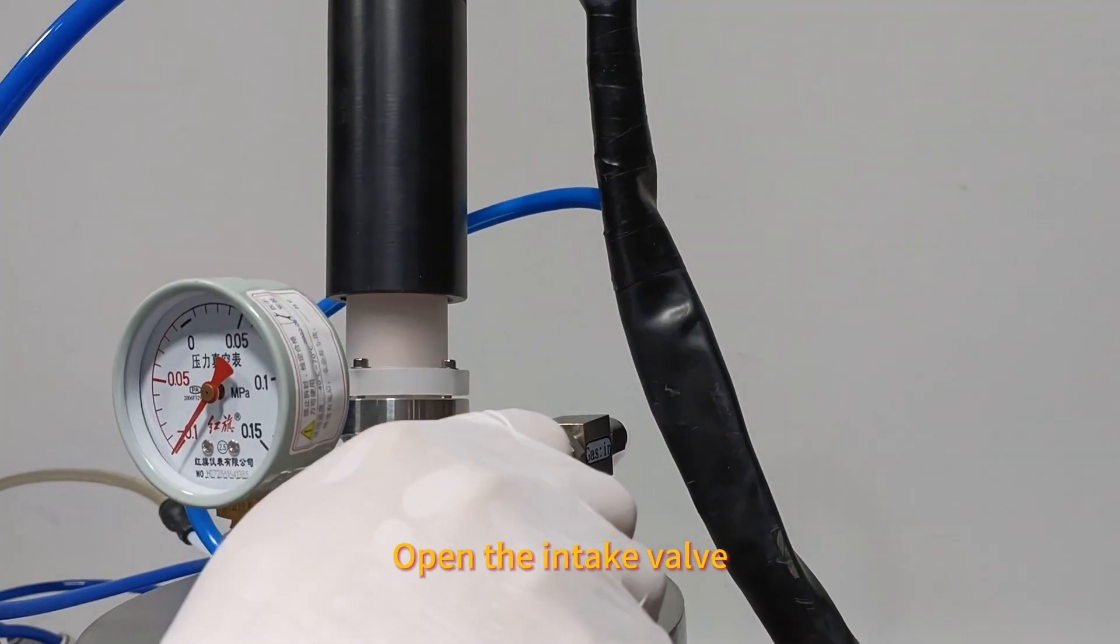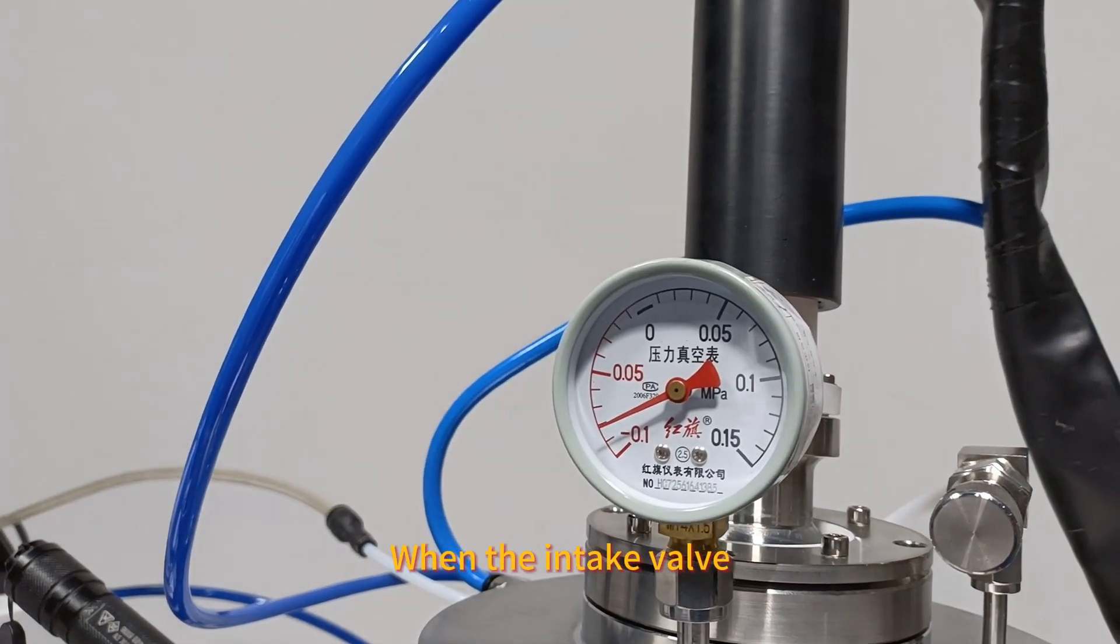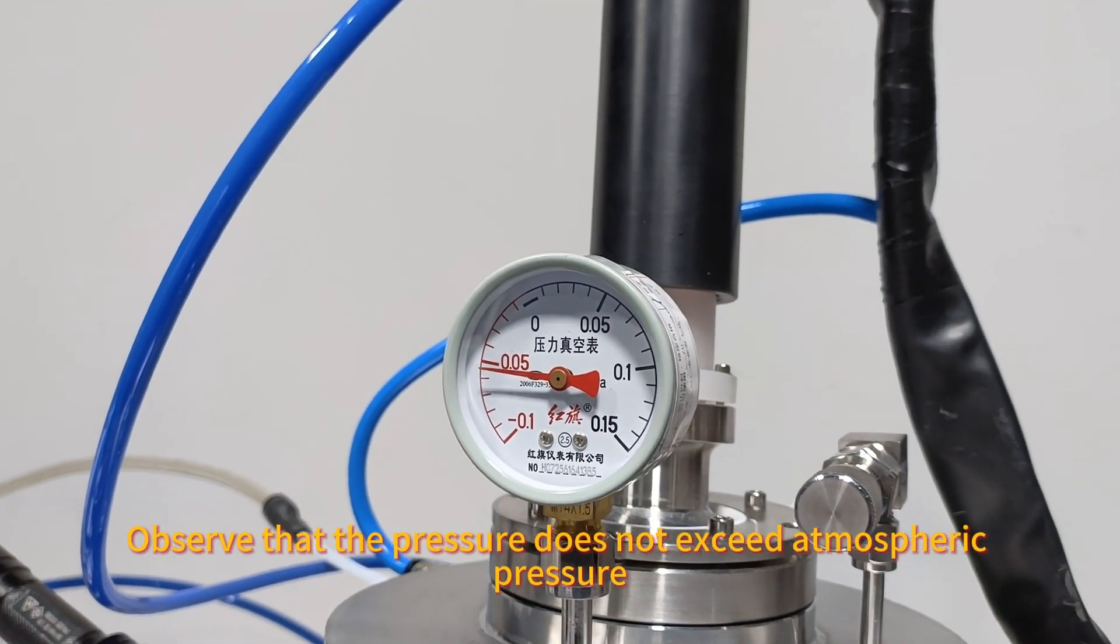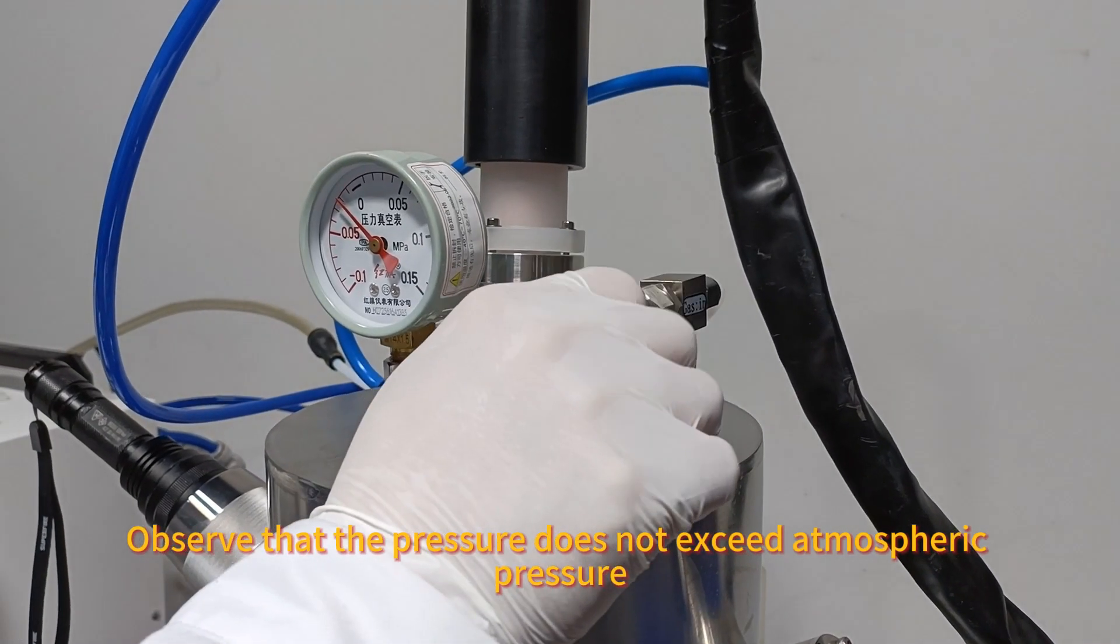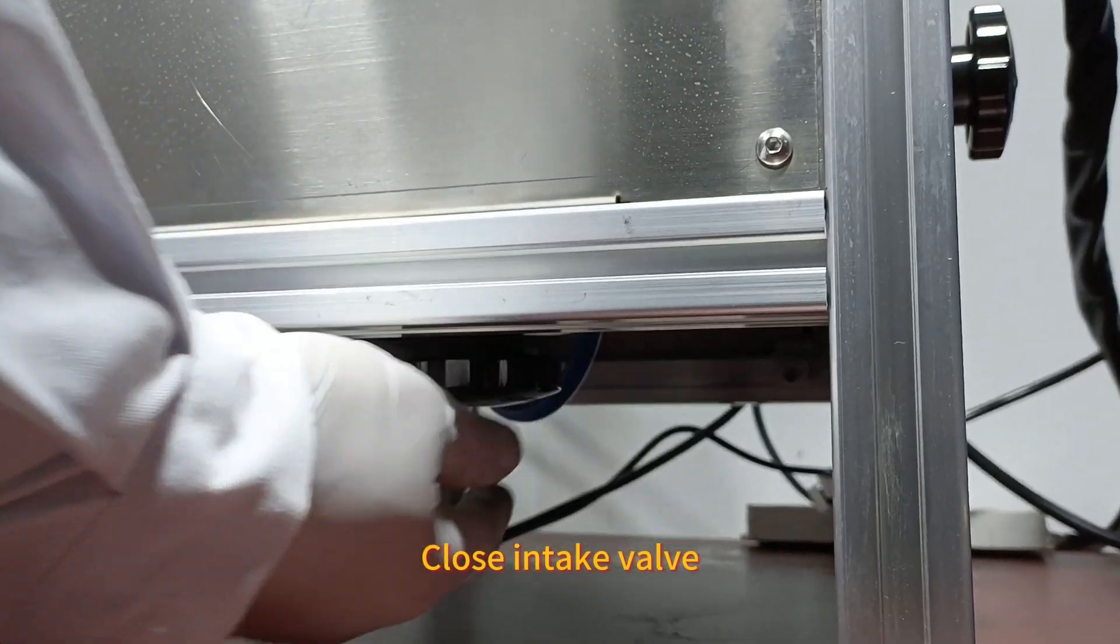Open the intake valve. Cleaning chamber. Open the exhaust valve when the intake valve is open. Observe that the pressure does not exceed atmospheric pressure. When close to atmospheric pressure, close intake valve.